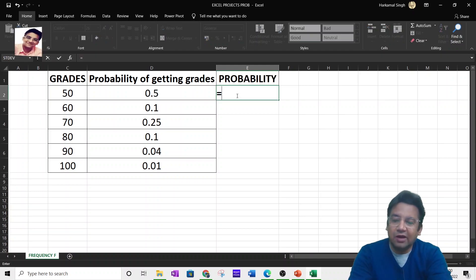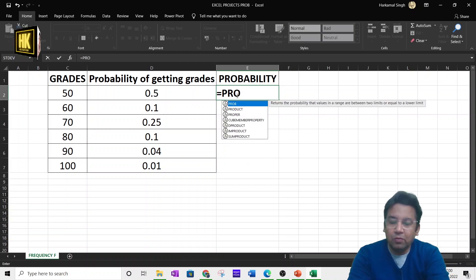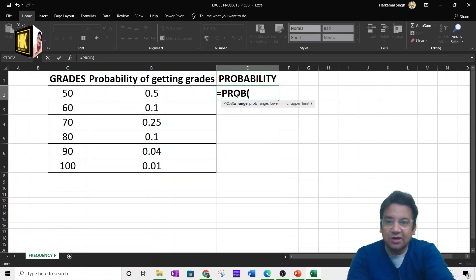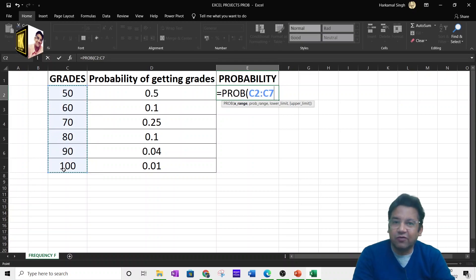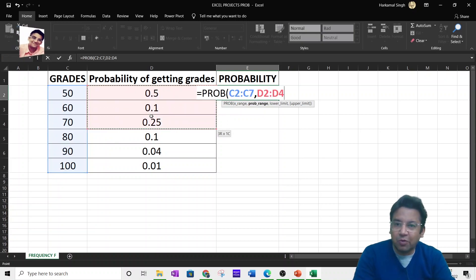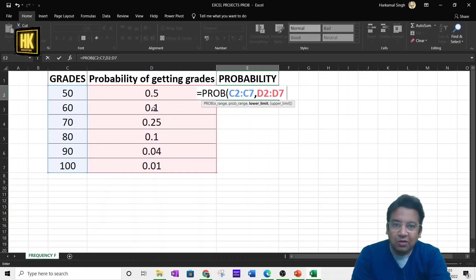In this cell, I will write P-R-O-B bracket start. You will select the X-range. These are the X-range from C-2 to C-7 comma. Now you will select the probability range. These are the probability range, the respective probabilities of these values comma.